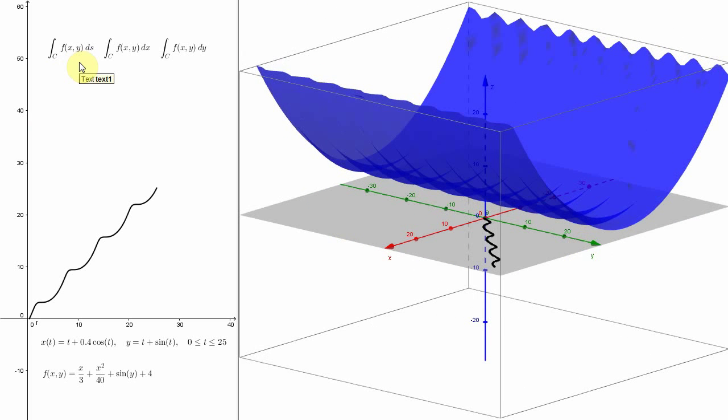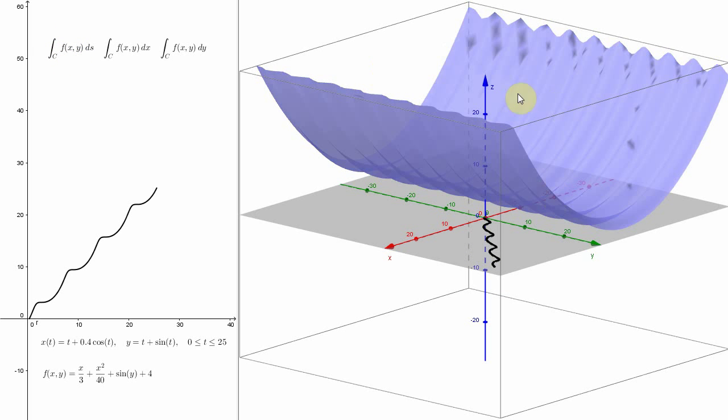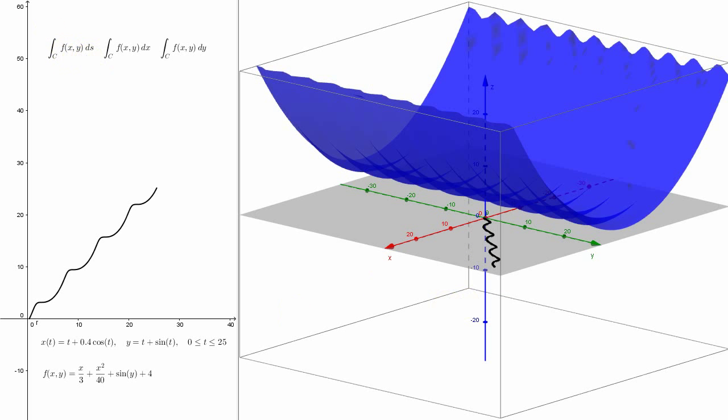The main line integral that I'd like to discuss is integral over this c, that's right here, of this z equals f of xy ds. And what does that look like?